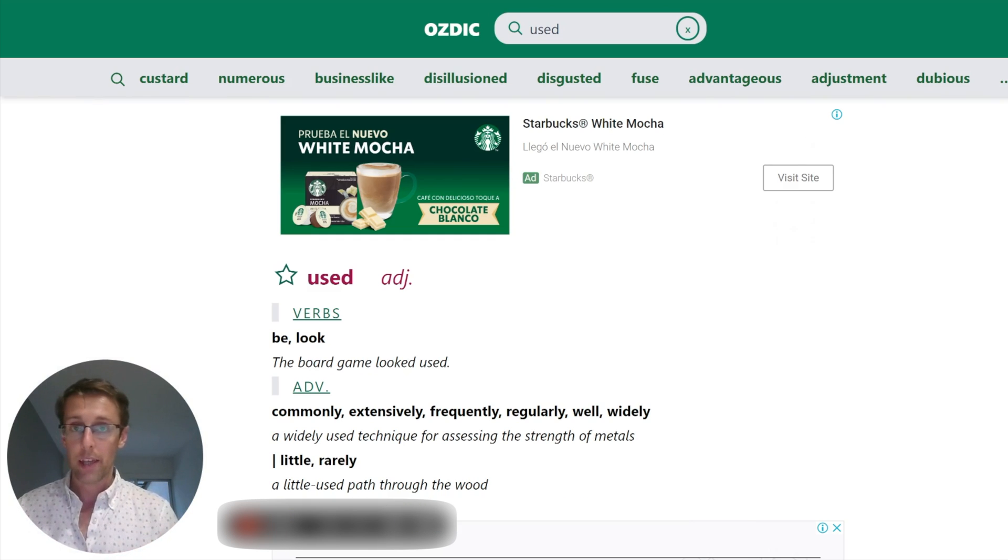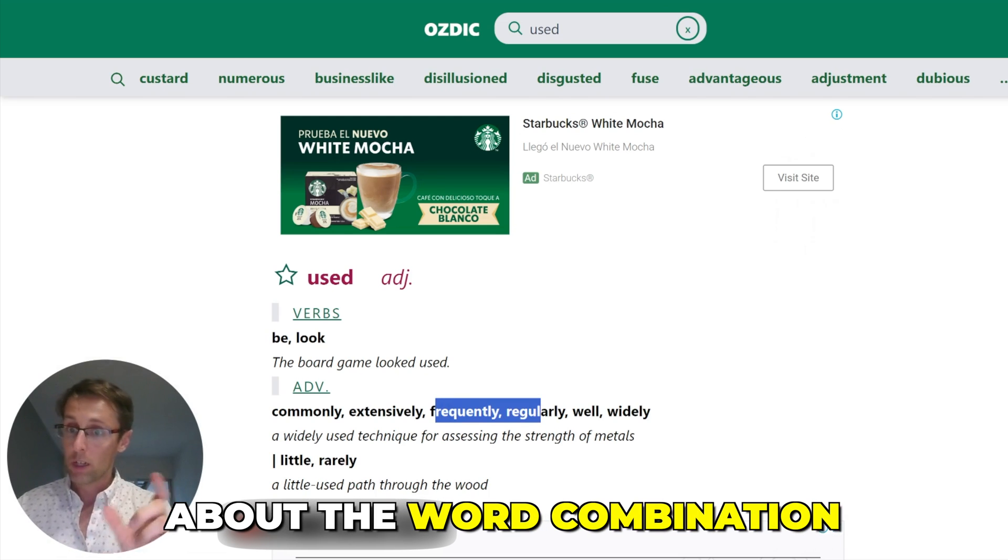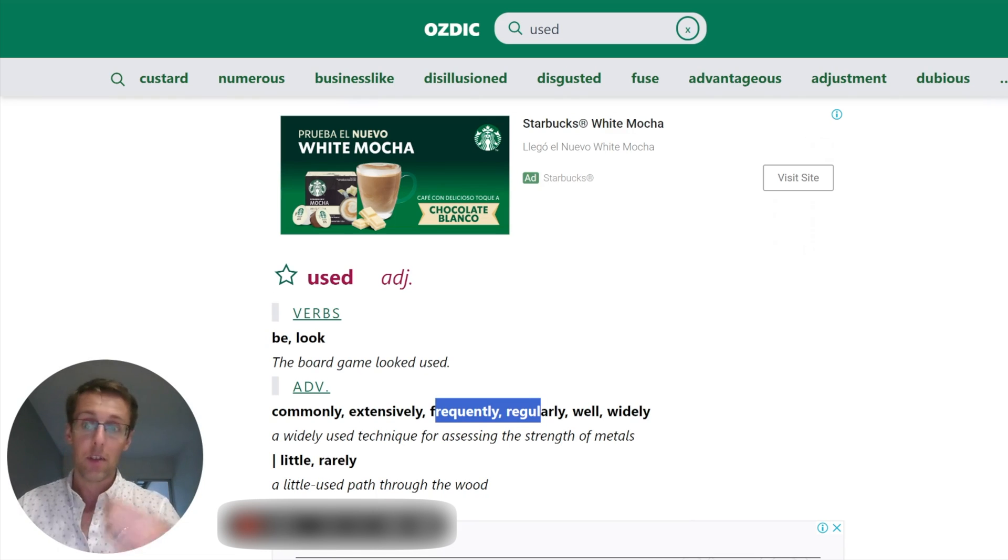Because maybe you wanted to say, for example, instead of being commonly used, maybe you wanted to say naturally used or something like this. So if you use OZDIC in just a couple of seconds, you can check if your intuition about the collocation, about the word combination is correct. And therefore you can avoid a lot of common mistakes that you might be making when it comes to academic writing.